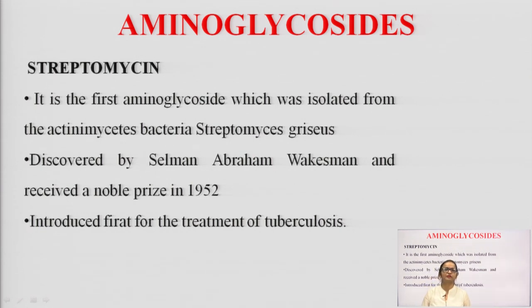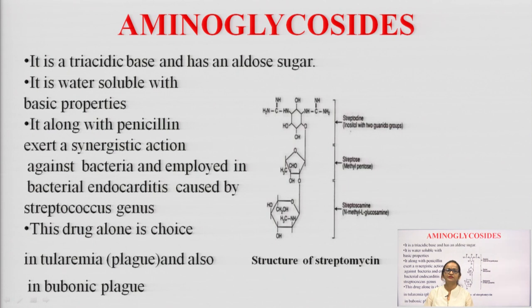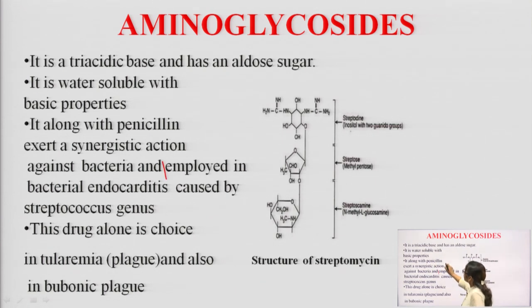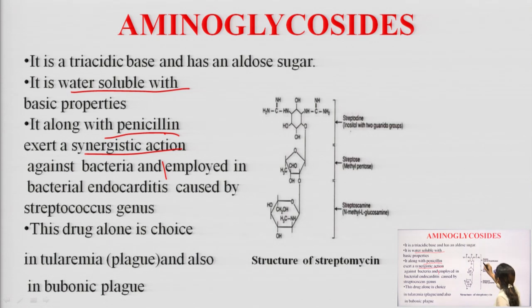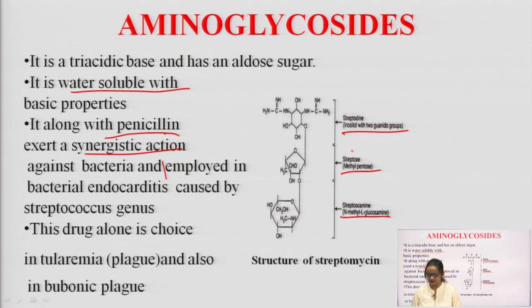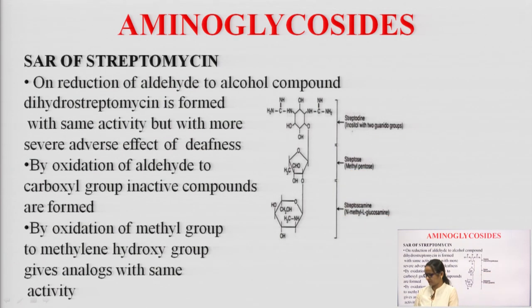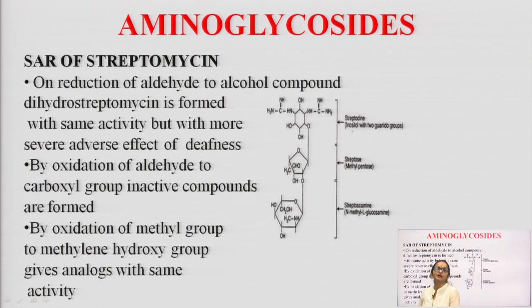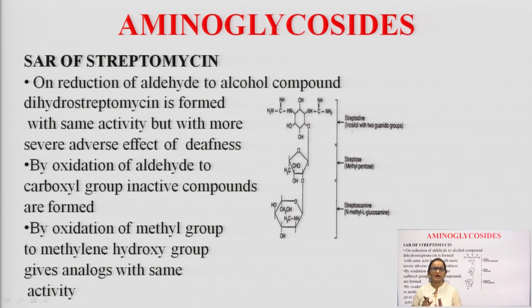Streptomycin was the first aminoglycoside, obtained from Streptomyces griseus, discovered by Waksman who received a Nobel Prize. Its structure includes inositol, methyl pentose, and N-methyl-L-glucosamine. It exerts synergistic action with penicillin and is water soluble. SAR of streptomycin: reduction of the aldehyde to an alcohol gives the same activity but reduces the severe adverse effect of deafness; aldehyde oxidation results in no activity.